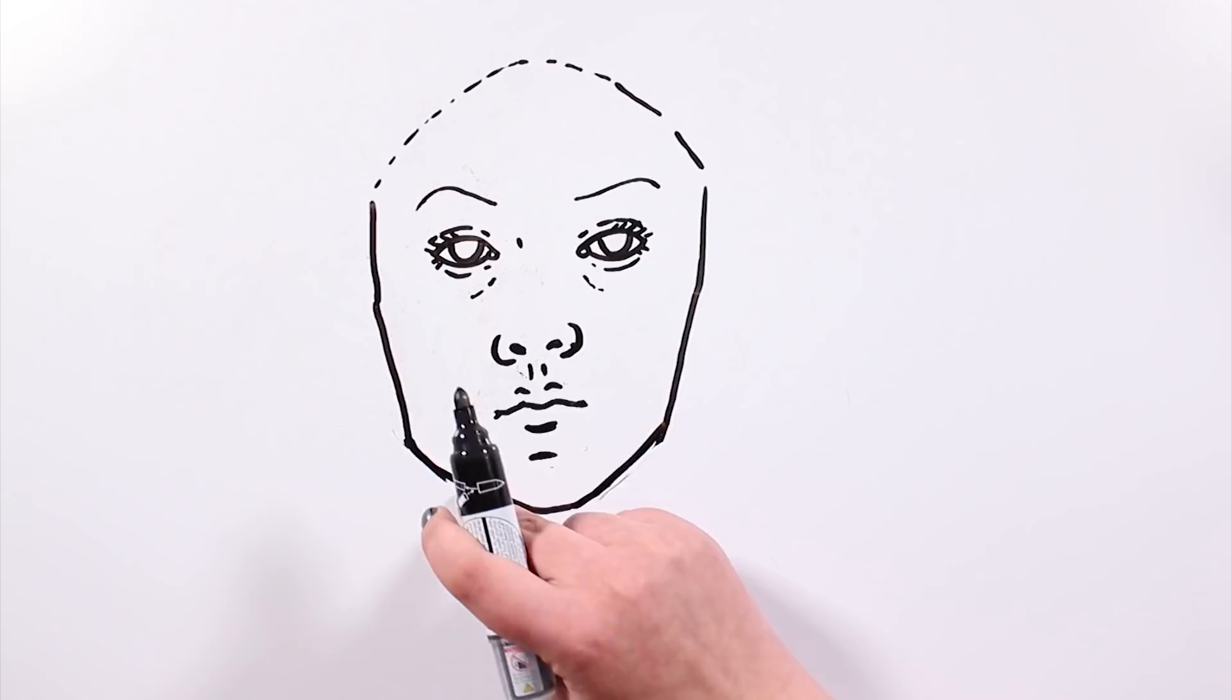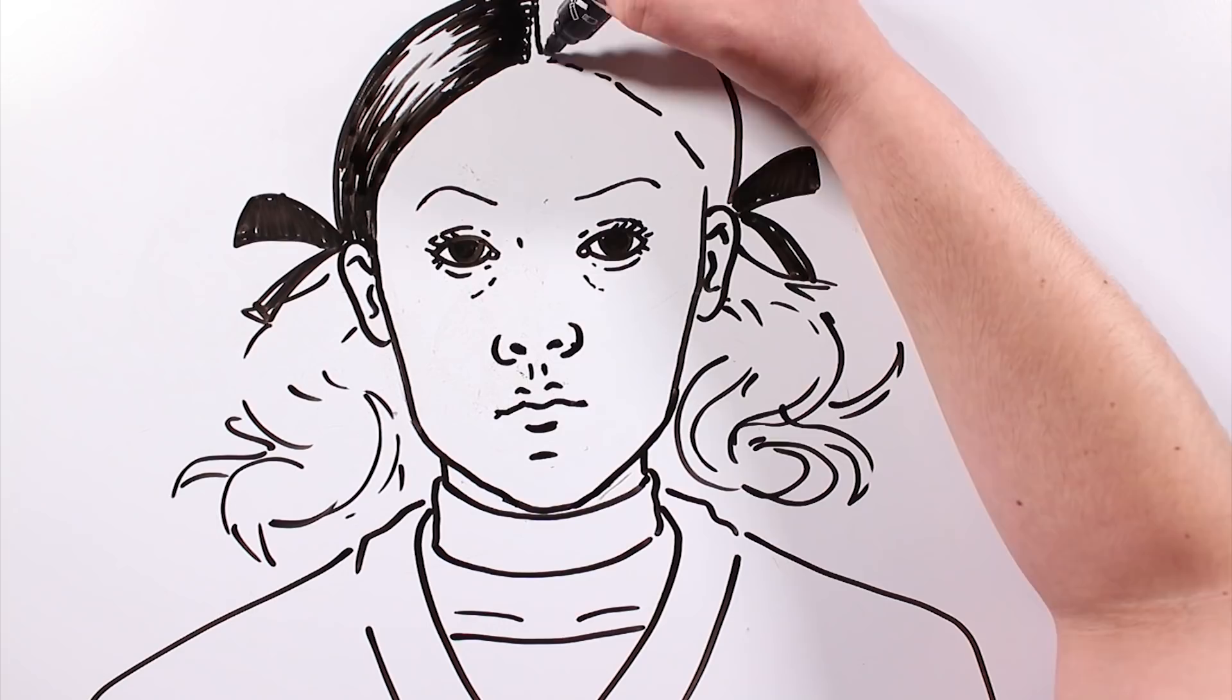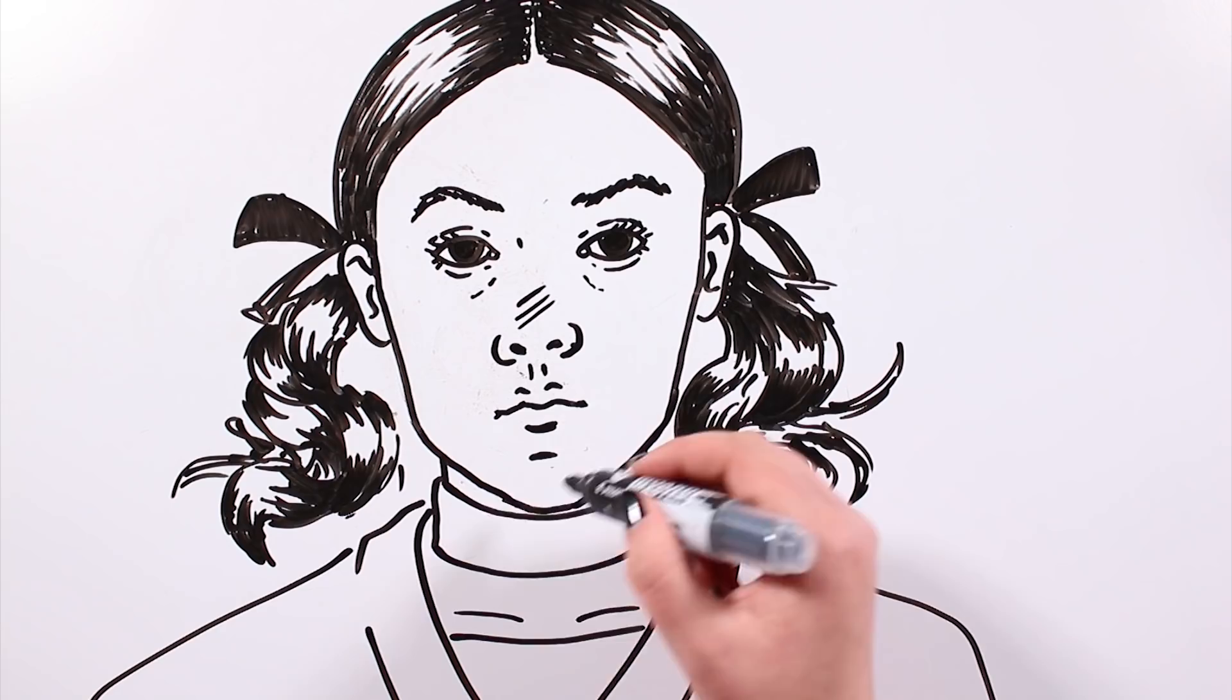Many of you may know the movie Orphan, released in 2009 where a couple adopts Esther, an 8 year old girl, apparently angelic, but who hides a terrible secret.